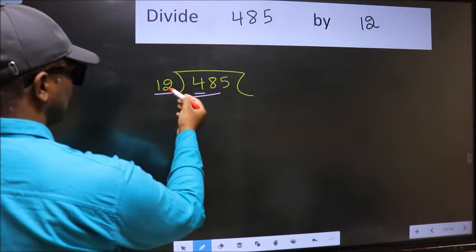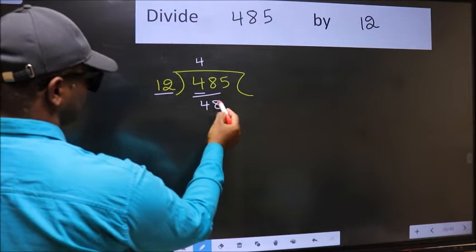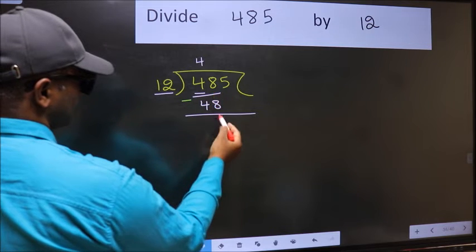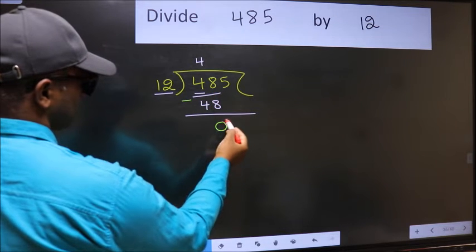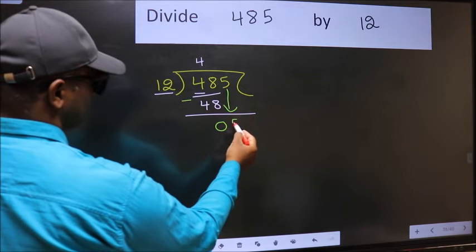When do we get 48 in 12 table? 12 fours 48. Now we should subtract. 48 minus 48, 0. After this, bring down the beside number. So 5 down.